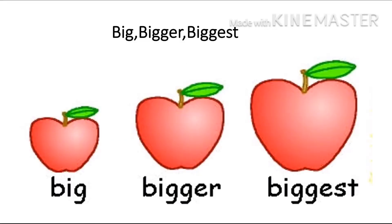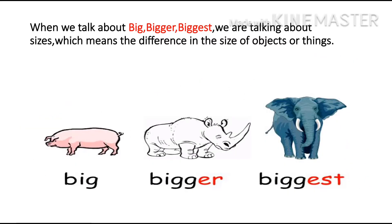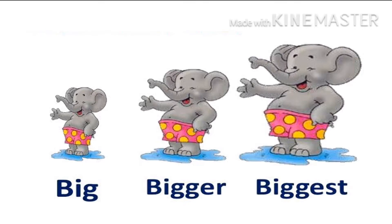So let's start with big, bigger and biggest. When we talk about big, bigger and biggest, we are talking about sizes, which means the difference in the size of objects or things. Can you see in this picture? The pig is big, the rhino is bigger, but the elephant is the biggest. You can see another image of three elephants which will help you to compare the sizes of big, bigger and biggest.